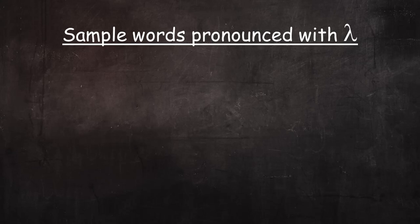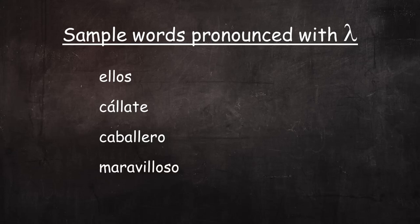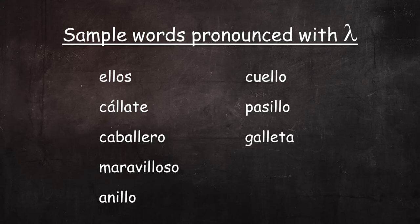Here are some sample words pronounced with elie: ellos, callate, caballero, maravilloso, anillo, cuello, pasillo, galleta, aquelio, desarrollo.